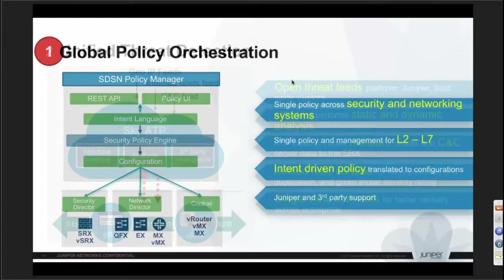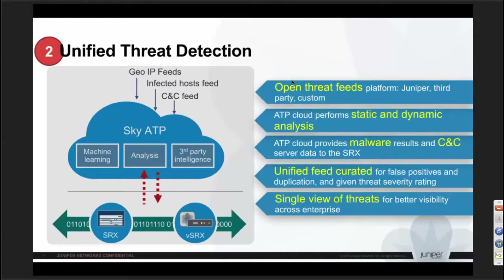For the threat detection piece on the left-hand side, the firewall or IPS at the gateway level can only do so much calculation due to limited CPU. That's why you have cloud-based intelligence called Sky ATP — Advanced Threat Protection — which uses machine learning language, dynamic analysis, and sandboxing. It can also take third-party feeds or feeds created by your own environment. Many finance organizations subscribe to feeds specific to financial business. Feeds like GYP, Infected Host, and CNC are all compiled and normalized here.